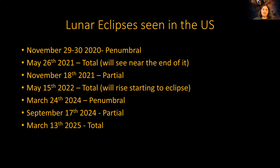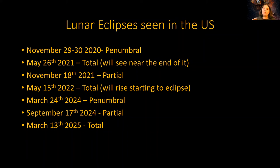For here in the United States, around Thanksgiving time in 2020 we'll get to see a penumbral eclipse — the moon will start to get slightly darker. There is one coming up in May 2021, but we'll only get to see near the end of it as the moon rises while finishing its eclipse. The next total lunar eclipse we'll get to see in its entirety is not until 2025.